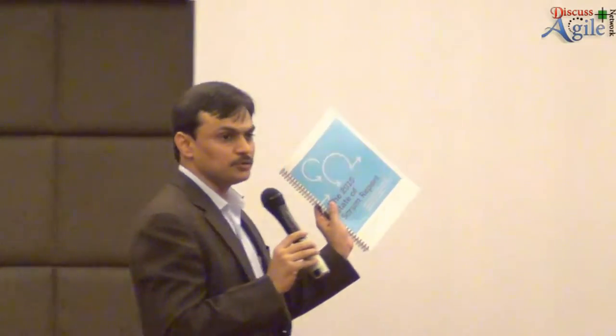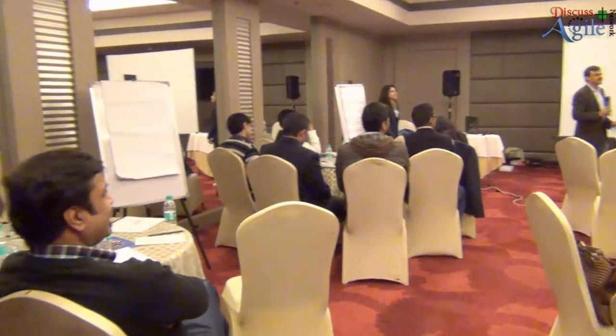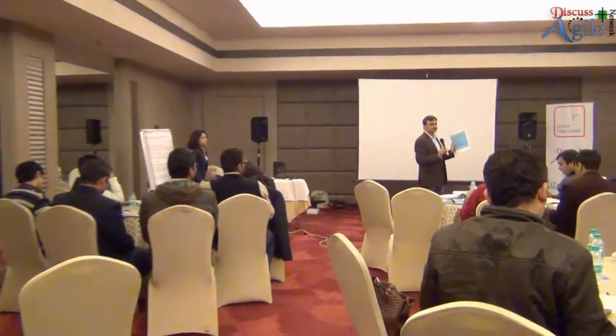Let me introduce the structure first. How many of you have seen this report before? Every year, Scrum Alliance does a survey called State of Scrum. They collect data from lots of Scrum practitioners and compile it into the State of Scrum Report. This came out in July 2015, so it's about six months old, but it helps us understand where Scrum stands.